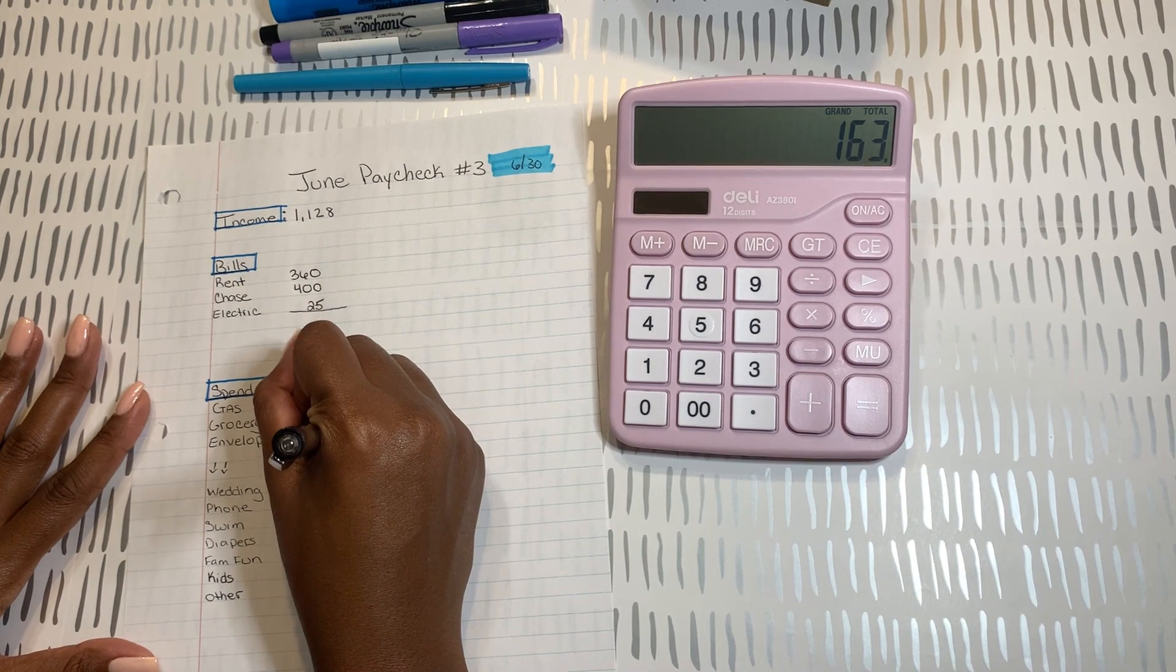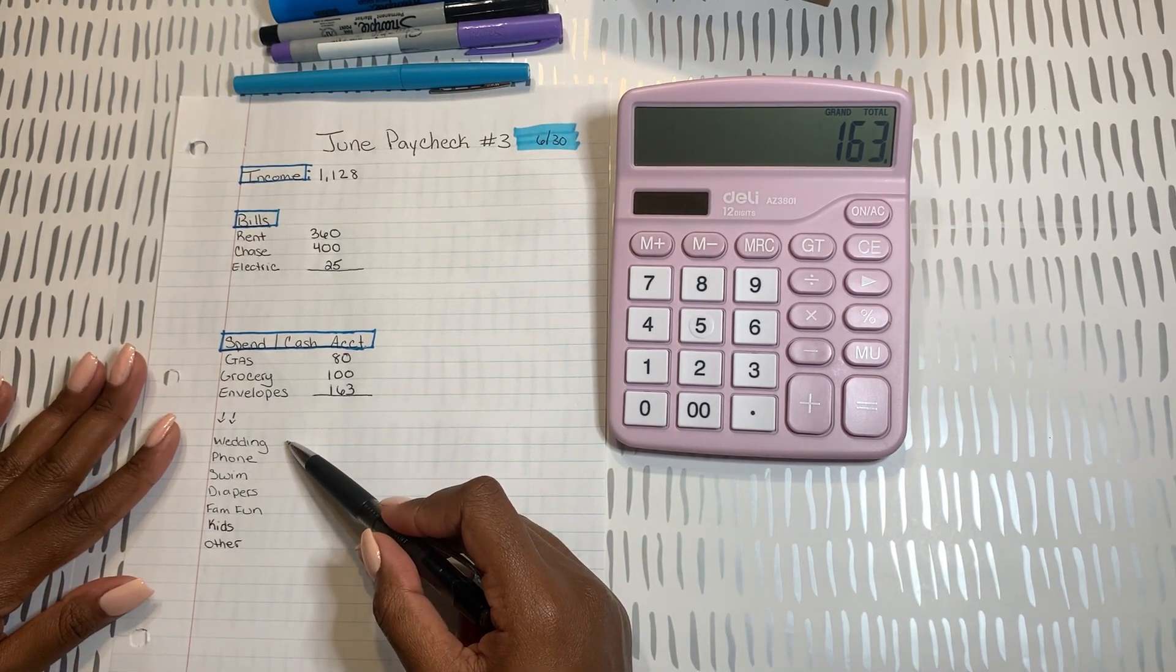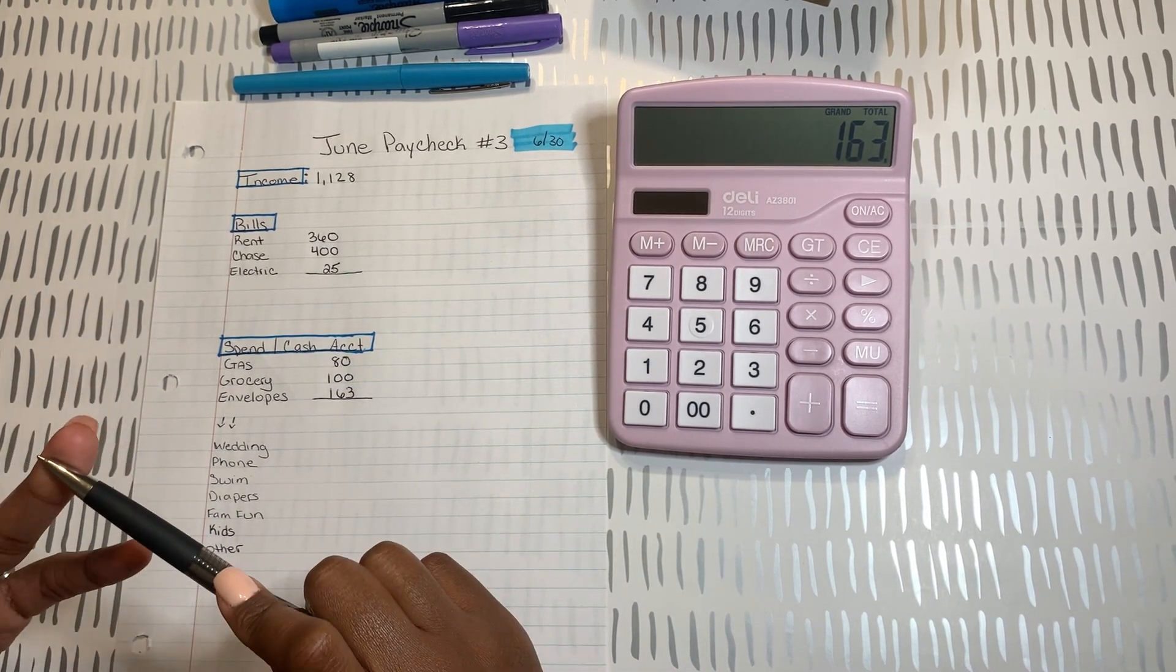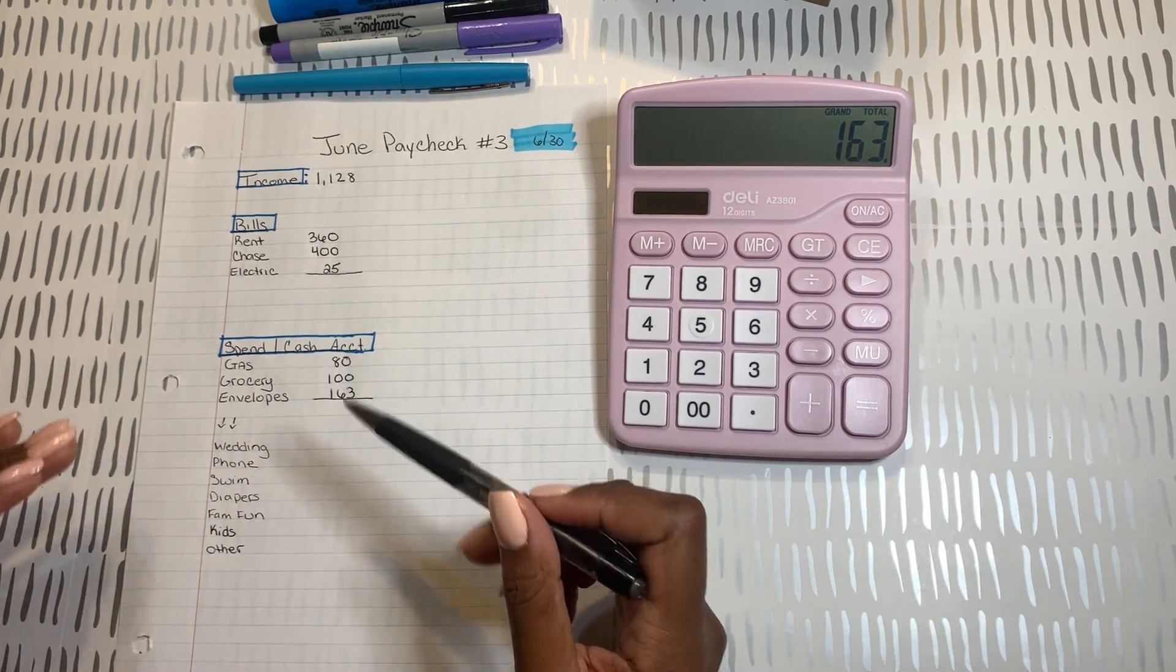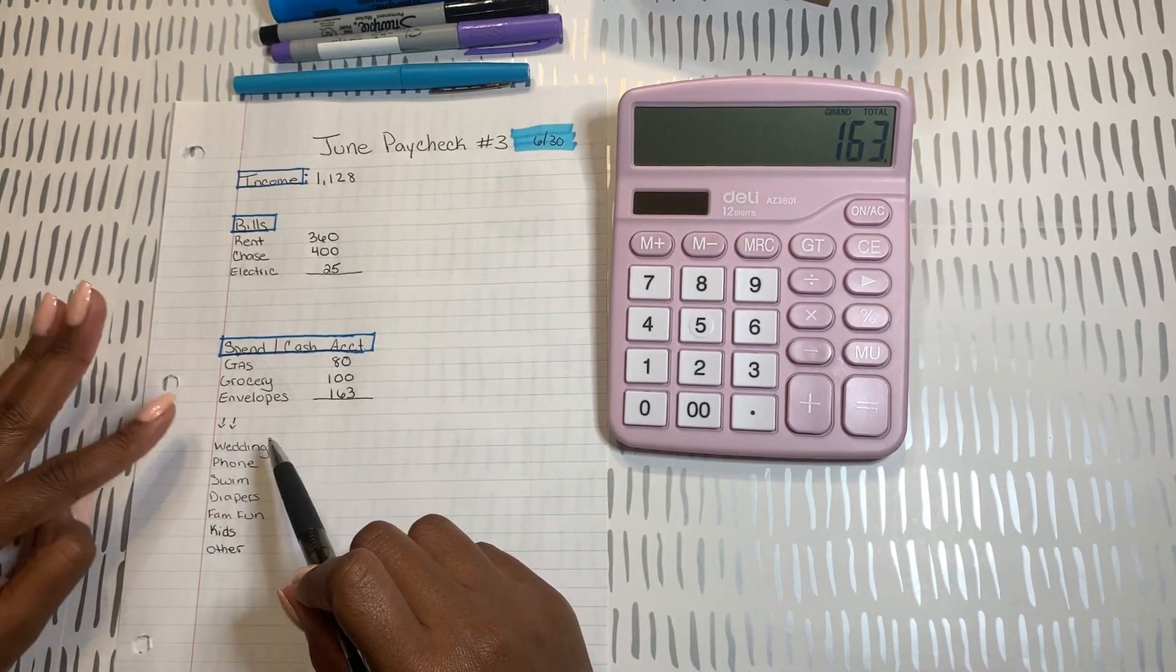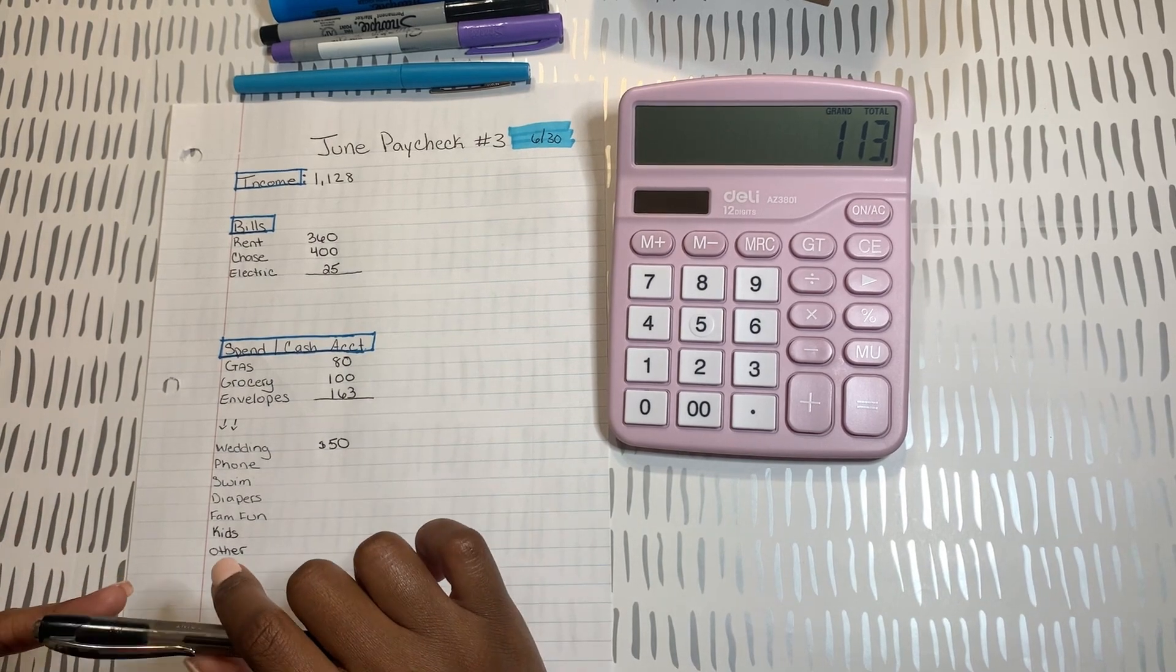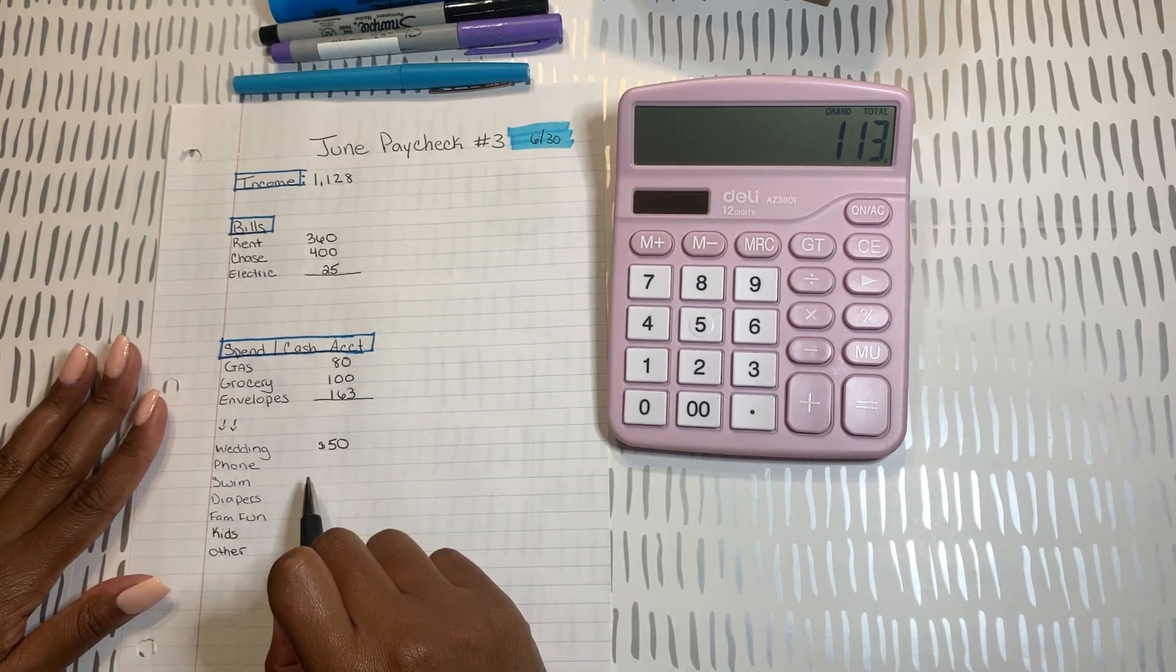So that leaves me with $163 for my envelopes. Not much at all. So for my envelopes, the main thing that I'm focusing on - I've said before I am in a wedding, my brother-in-law's wedding this August. I'm in the wedding, my husband's in the wedding, my daughter's in the wedding, and my son is sort of in the wedding. So me and my husband are buying the things for us to be in the wedding, and I'm also helping with the bridal shower. I have an envelope for her wedding and I am adding $50 to that. This month in July I plan to get my daughter's dress, her shoes, my shoes, and figure out what I'm going to do with my hair.